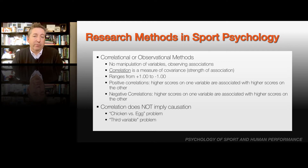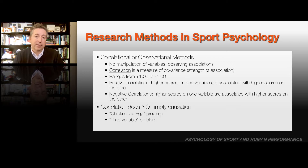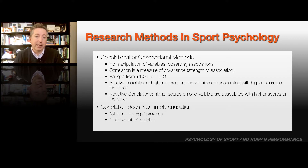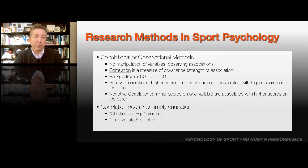There are a variety of different research methods used in sports psychology. One of the first is correlational or observational methods. These are methods that typically have the goal of trying to understand association between two or more variables. In these kinds of studies, there's typically no manipulation or changing of the variables of interest or the independent variables — we're just simply observing associations. The main measure often used is correlation, which measures the strength of covariance.